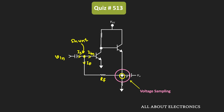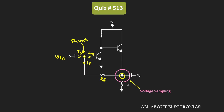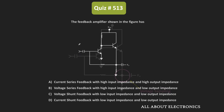That means in this feedback amplifier circuit, the output voltage is sampled and it is mixed with the input signal using the shunt connection. We know that on the output side, whenever we have the shunt connection or voltage sampling, the output impedance reduces. Similarly, on the input side, whenever we have the shunt connection, the input impedance also reduces. So we can say that for the given amplifier circuit, we have voltage shunt feedback, and this amplifier circuit will have low input impedance as well as low output impedance. Therefore, this is the correct answer.